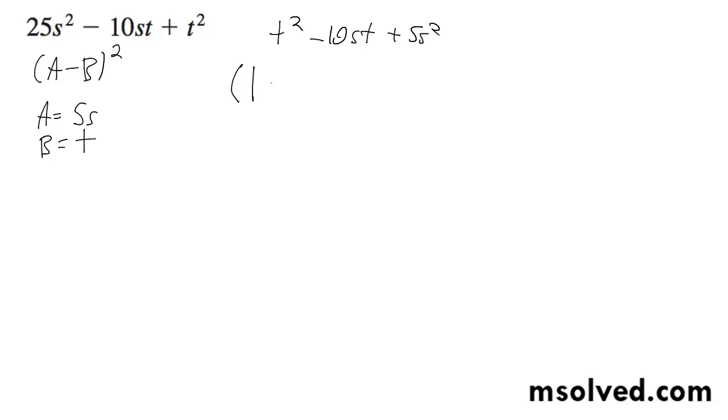So this can be t minus 5s, t minus 5s, and then t minus 5s. That's how you factor this completely.